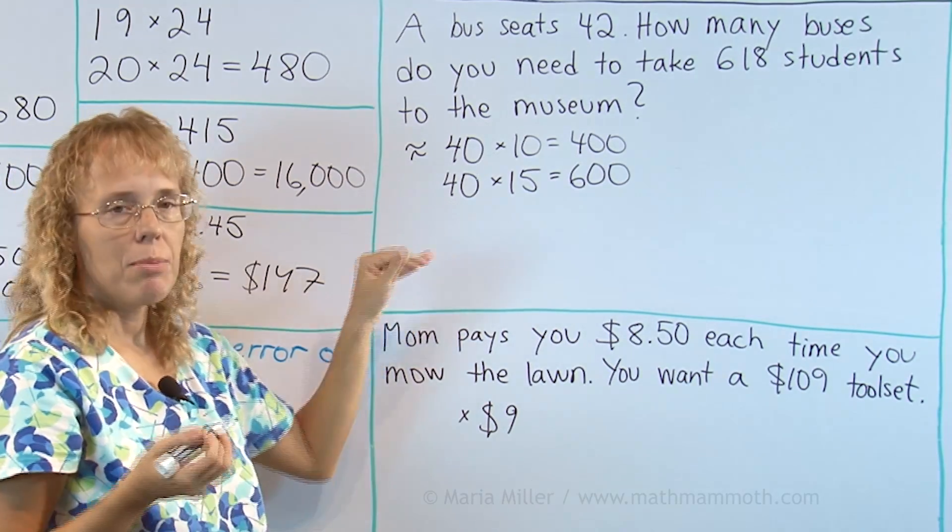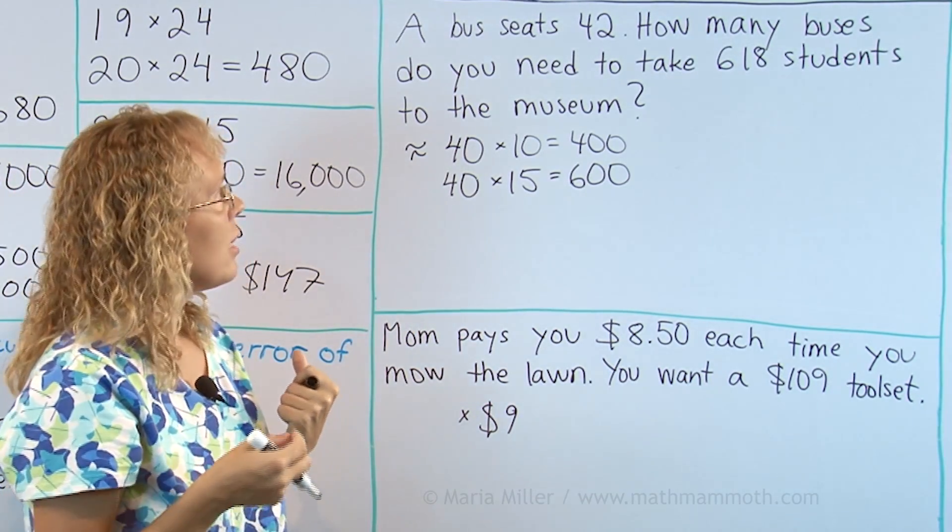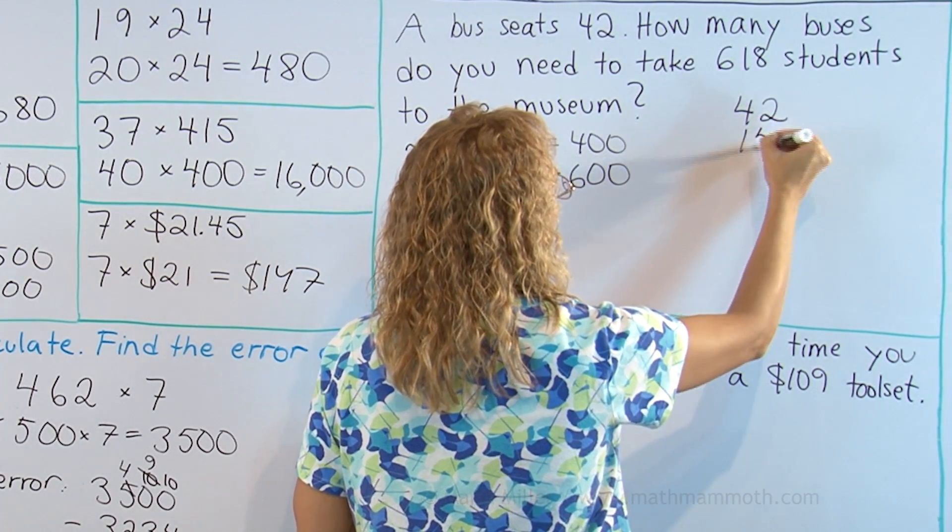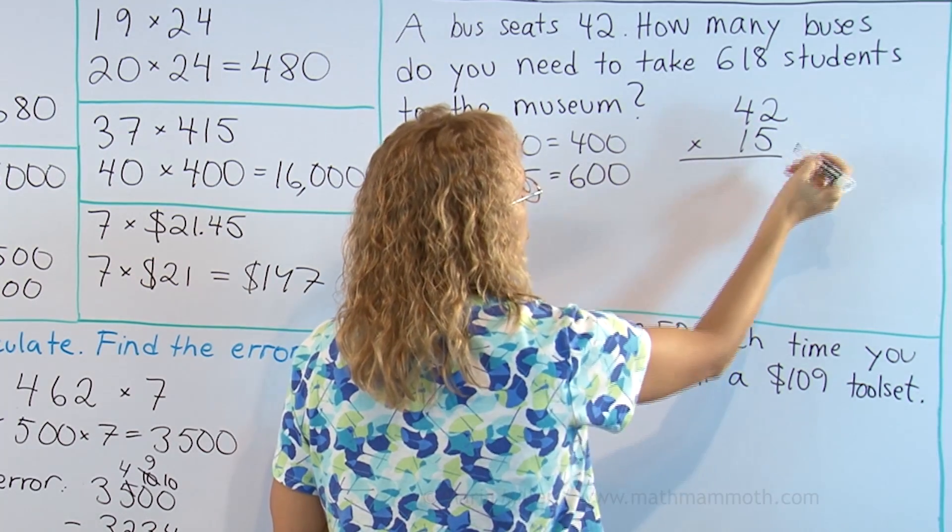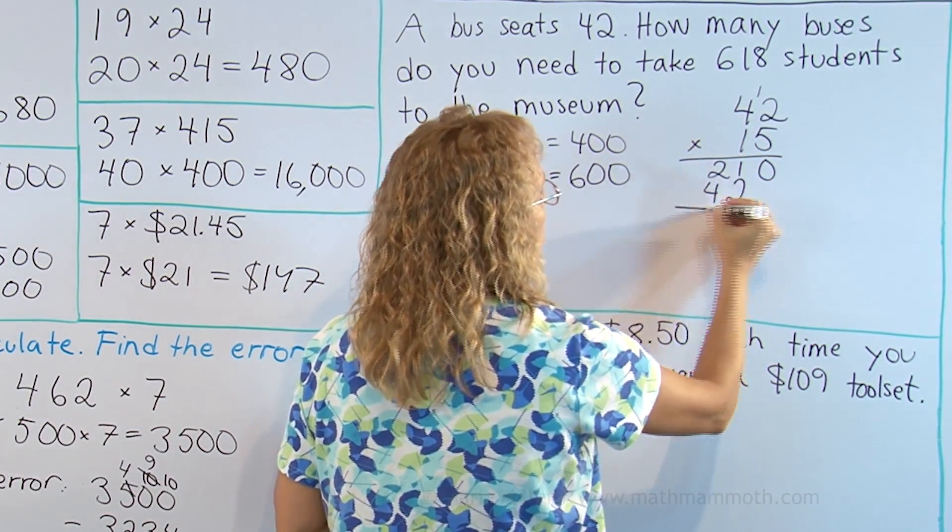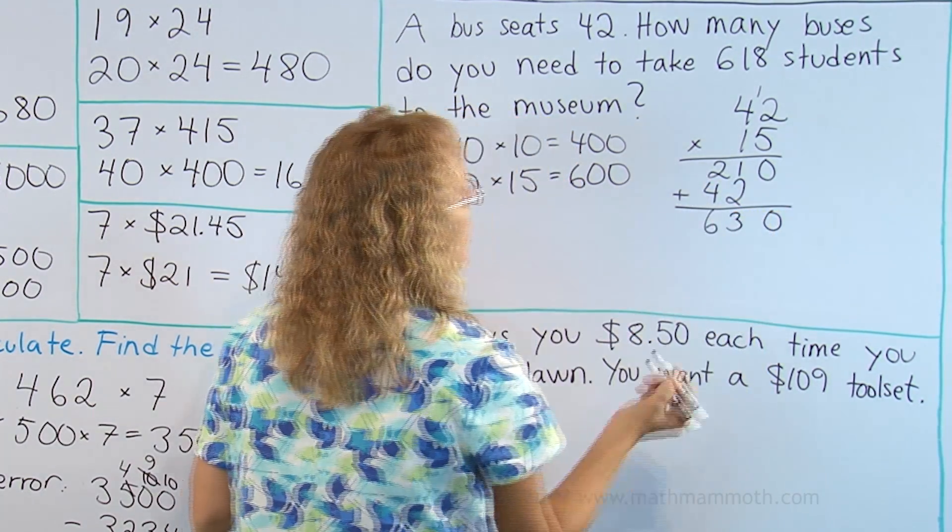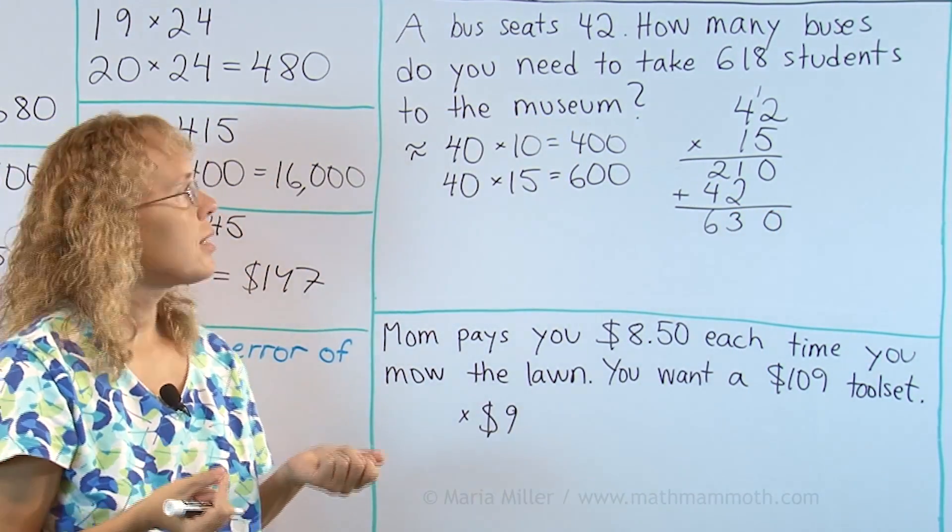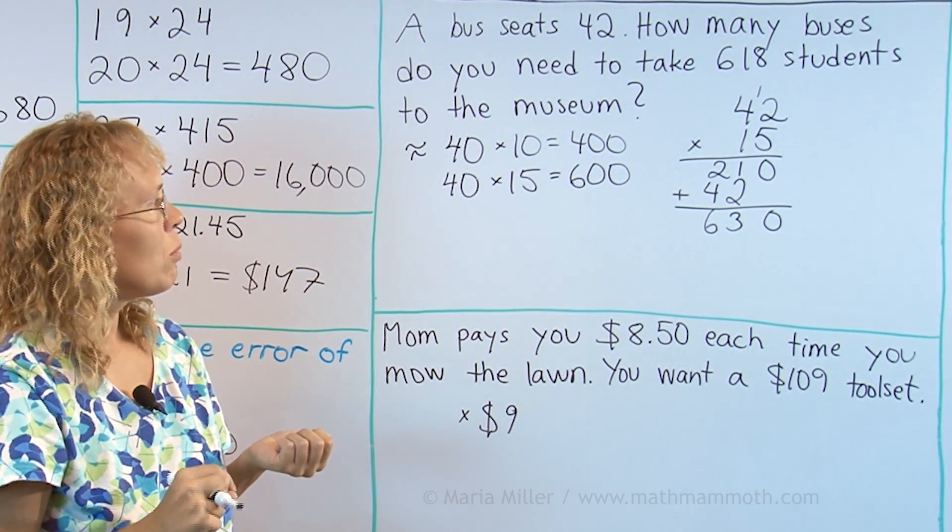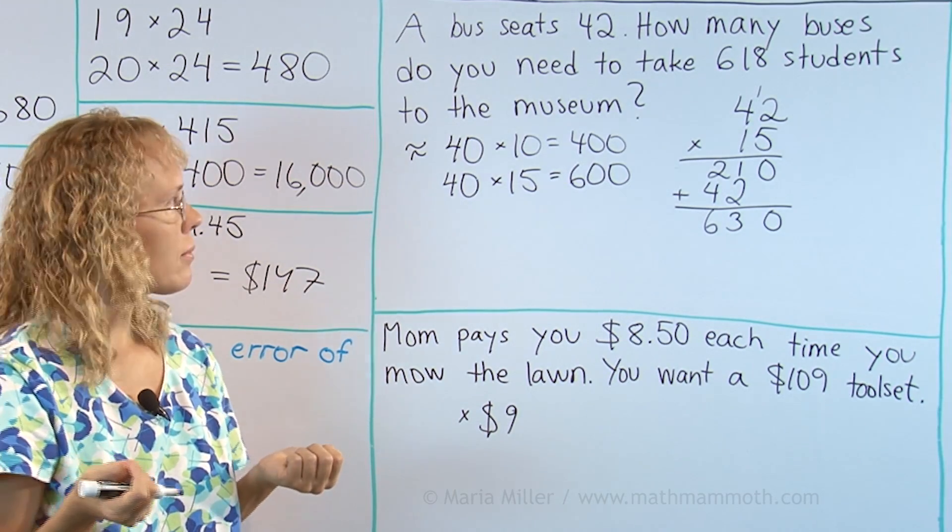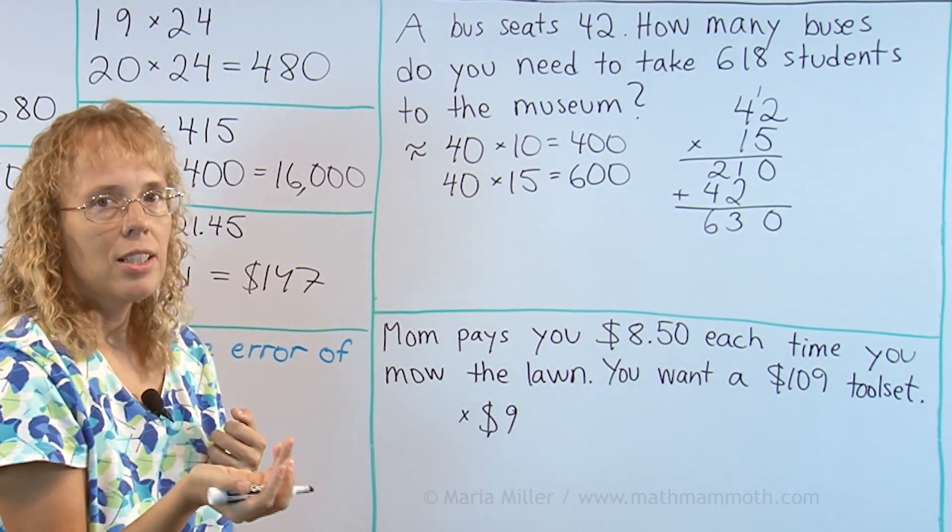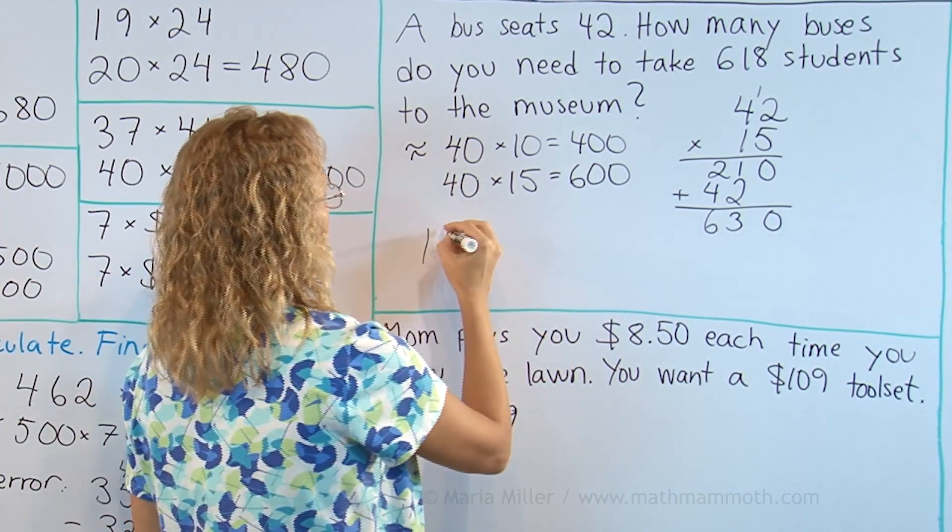So now I would need to check my estimation that will 15 buses exactly be enough. And now I will multiply 42 times 15 here to check. 5 times 2 is 10 and then 20, 21. 1 times 2, 1 times 4 and add 630. In other words 15 buses is enough to seat 630 students. So 15 buses is enough. Would 14 buses be enough? If I take away from here 42 then that's less than 600. So 14 buses is not enough. 15 buses is the final answer.